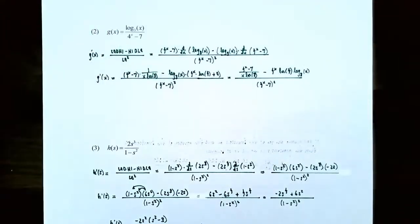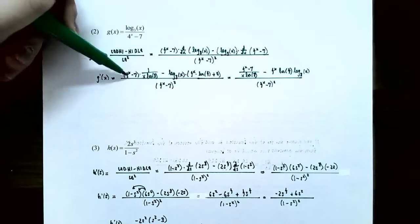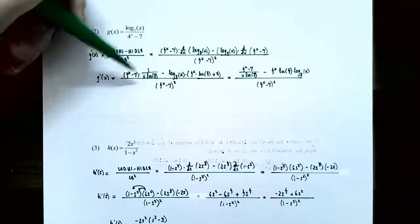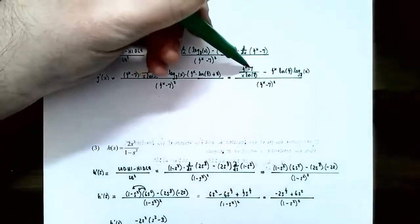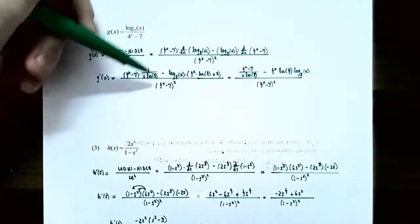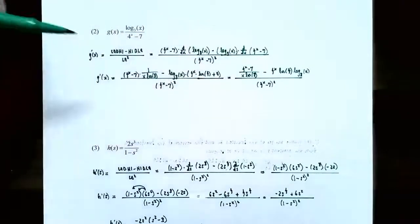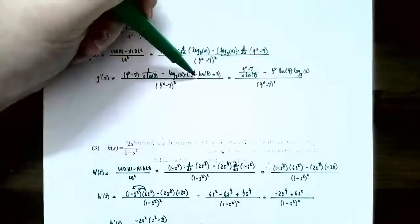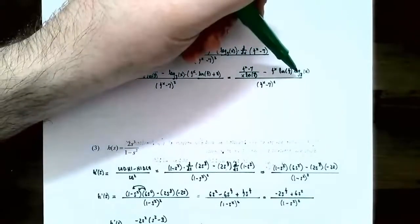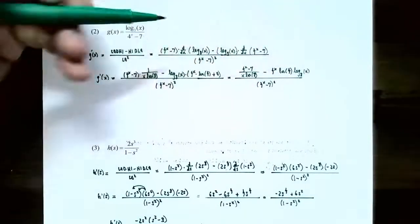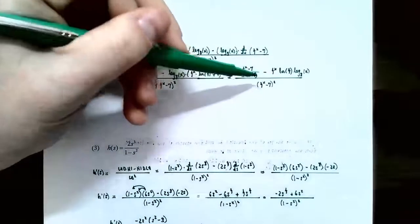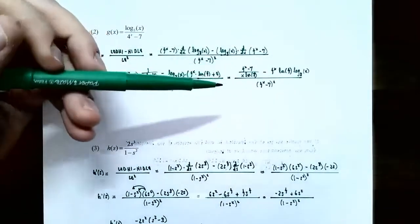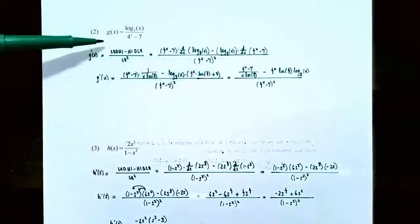Simplifying a bit: 4 to the x minus 7 times 1 gives 4 to the x minus 7 over x times natural log of 3, minus 4 to the x times natural log of 4 times log base 3 of x, all divided by 4 to the x minus 7, quantity squared. We don't need to simplify further since we were asked to find the derivative — and that is the derivative of g of x.